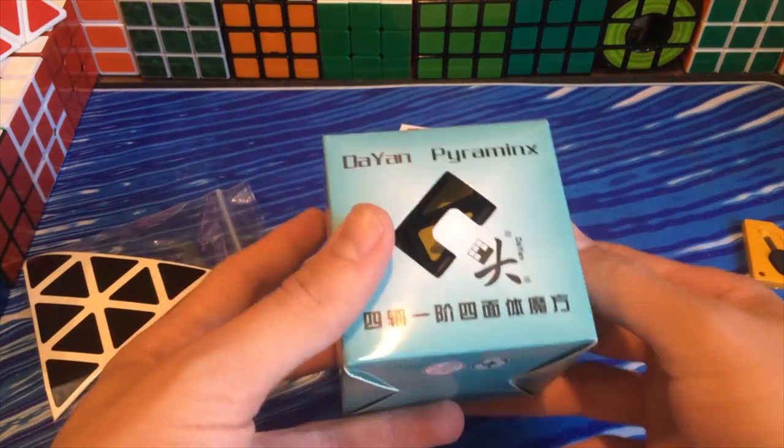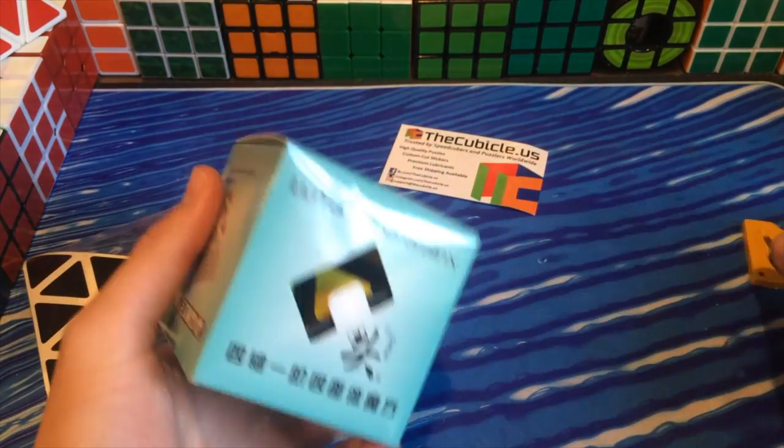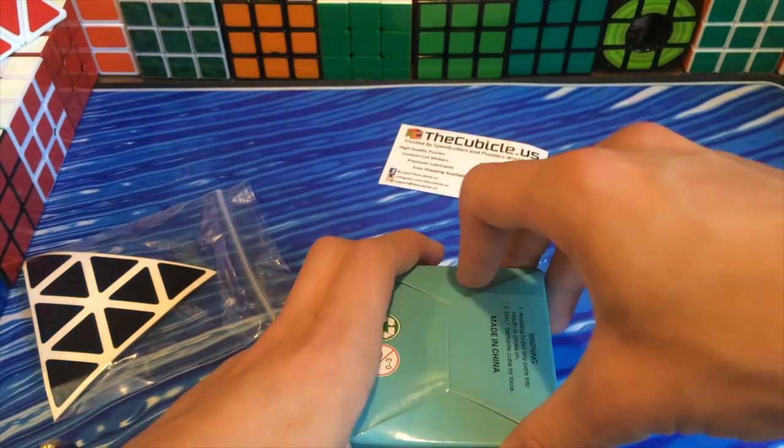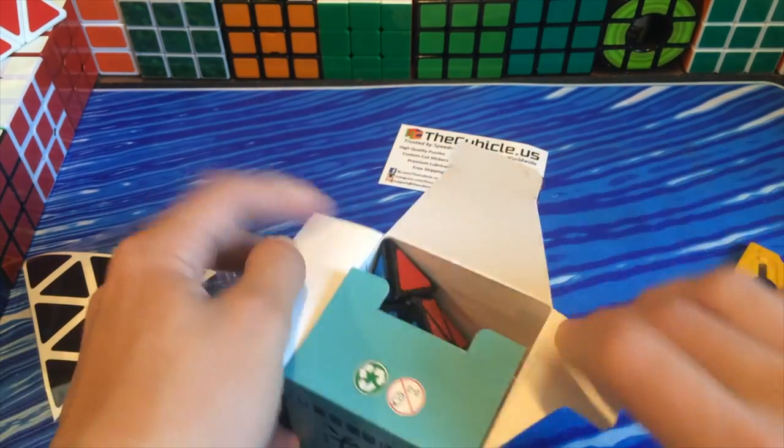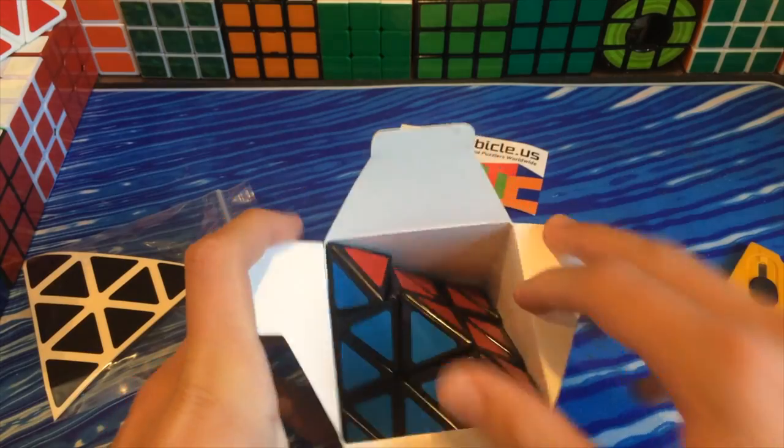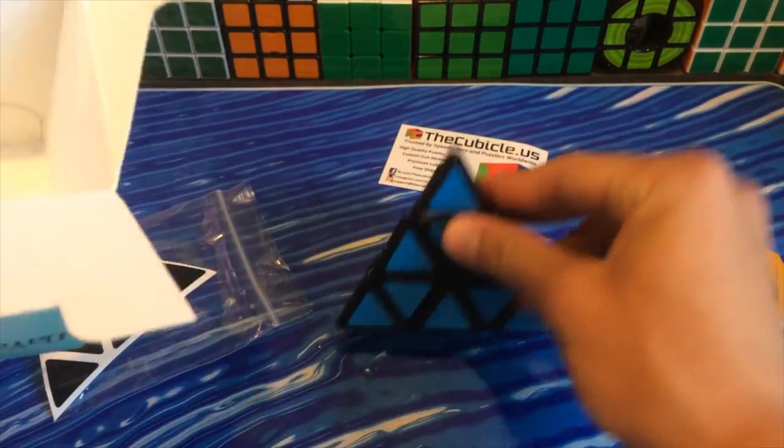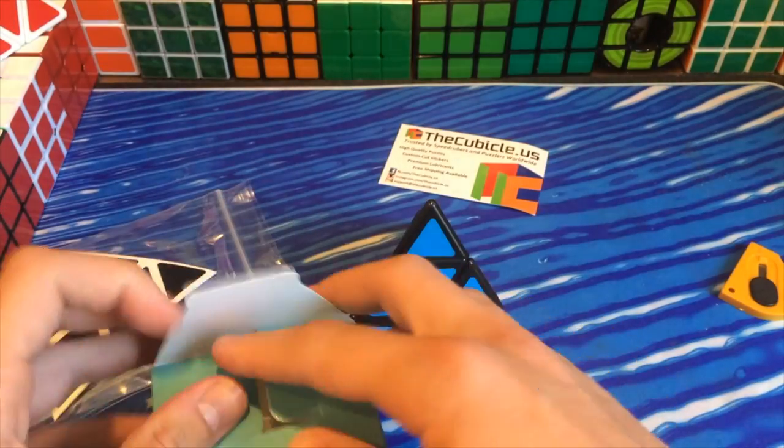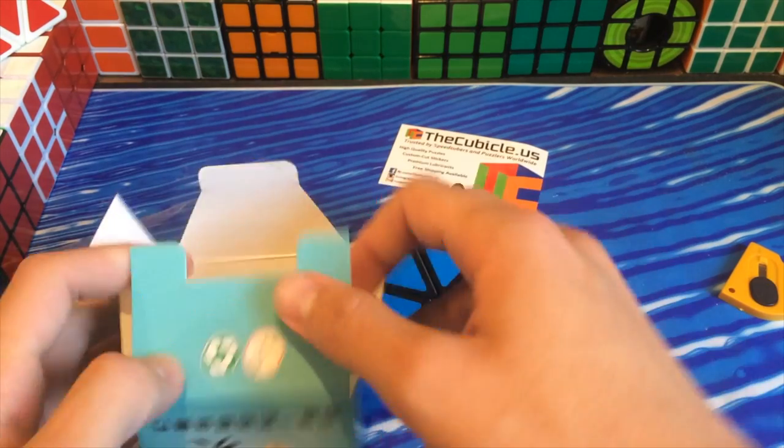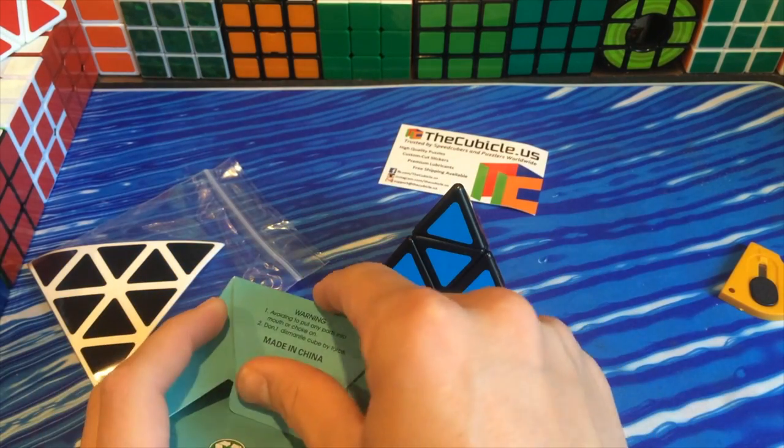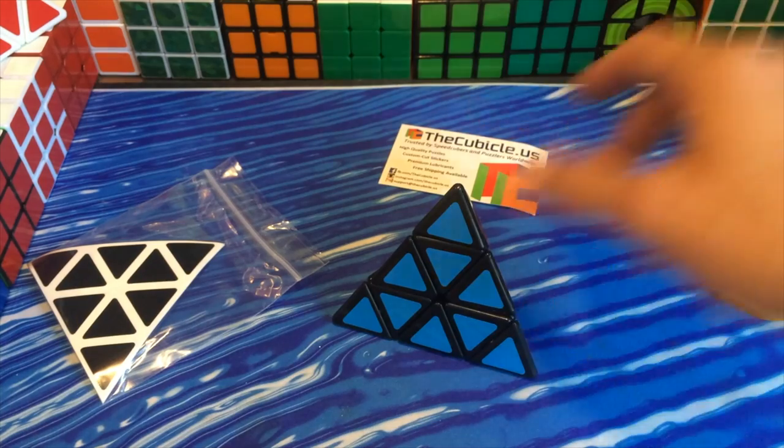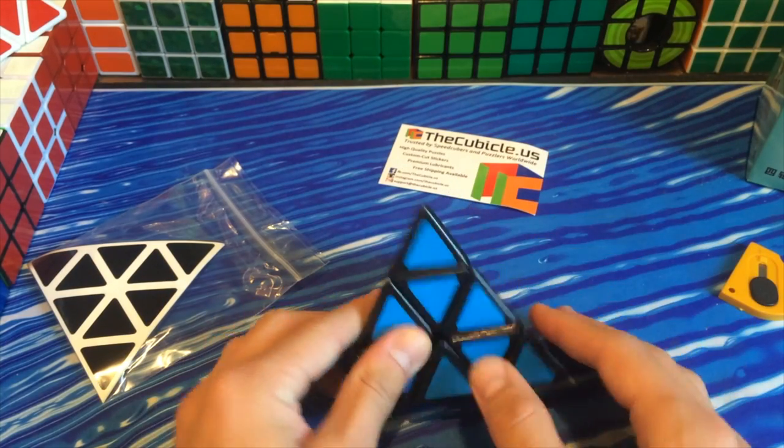Here's this little box, not as big as the Moyu one. Let's open it up. It's a really tight fit in there. It seems like it was just a regular cube box for a cubic puzzle and they kind of shoved it in there. Here it is.